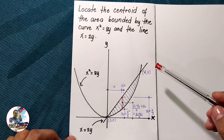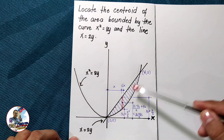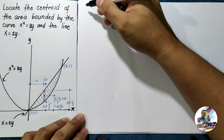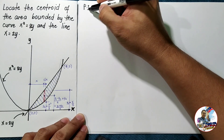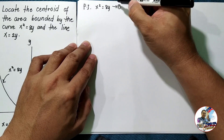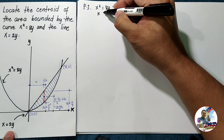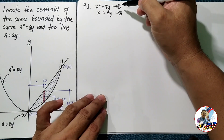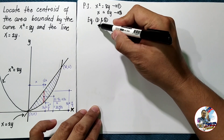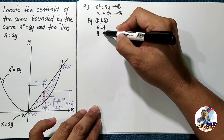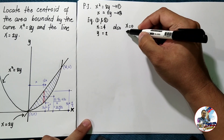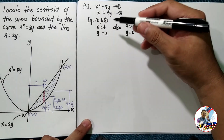It is important to find the points of intersection of the two curves. We have equation 1: x² = 8y, and equation 2: x = 2y. Equating them gives x = 4 and y = 2. Substituting x = 0 gives y = 0. So the two points of intersection are (0, 0) and (4, 2).